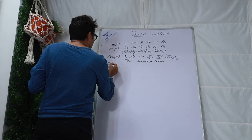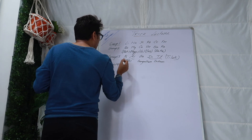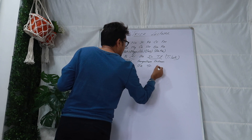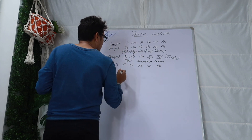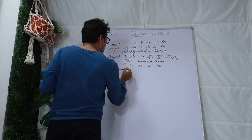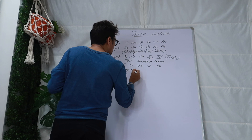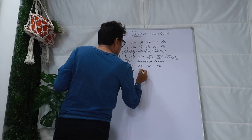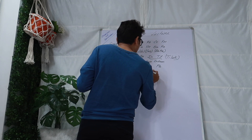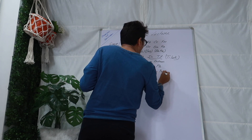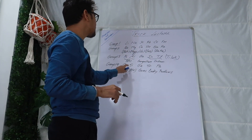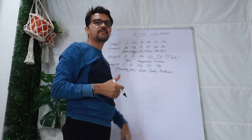Then you come to group 14. Group 14 mnemonic is: Chemistry Sir Gives Sun Key Problems. C is carbon, Si is silicon, G is germanium, Sn is tin, and Pb is lead. So carbon, silicon, germanium, tin and lead form group 14.